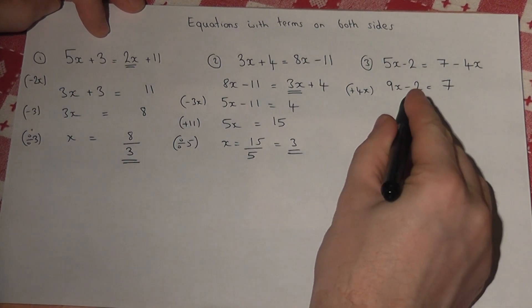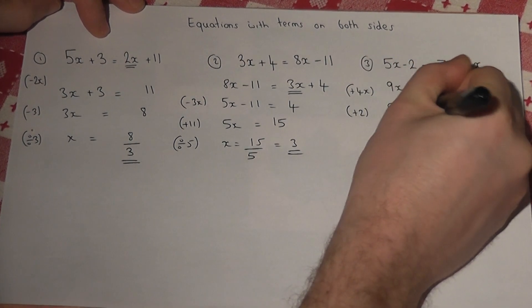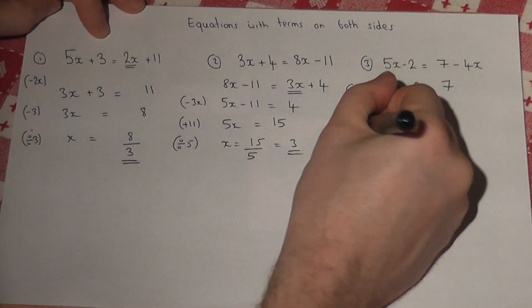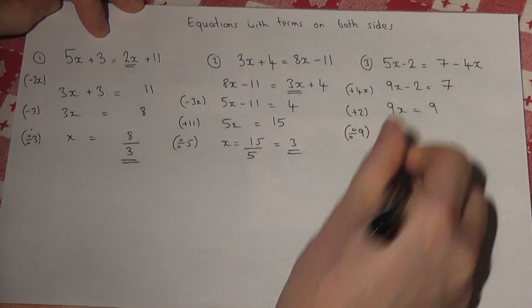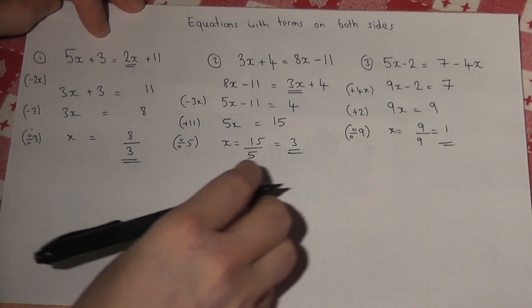There's then a minus 2 there, so I must add 2. So 9x equals 7 plus 2, 9. And then finish by dividing by 9. So x equals 9 over 9, which equals 1.